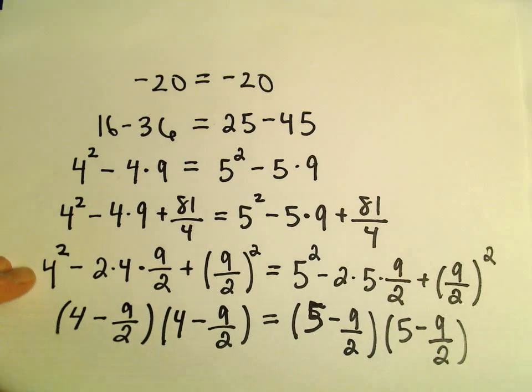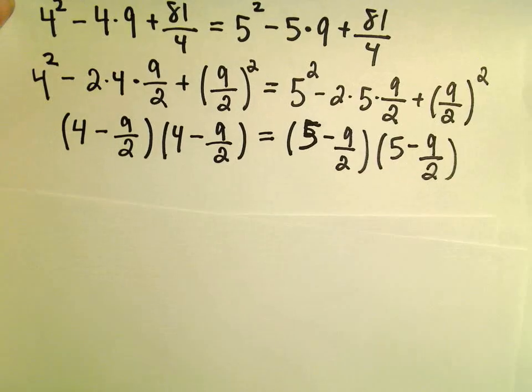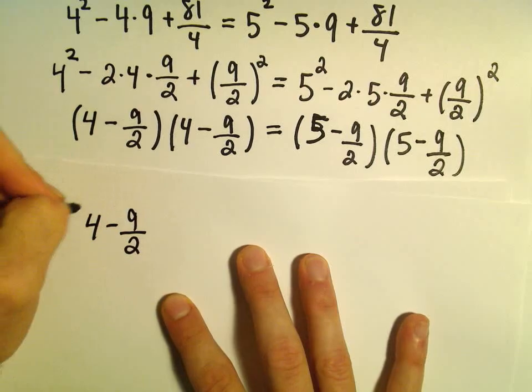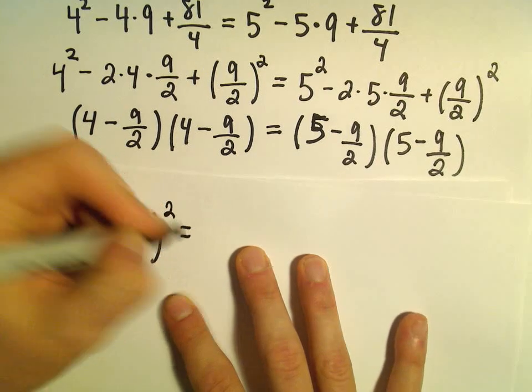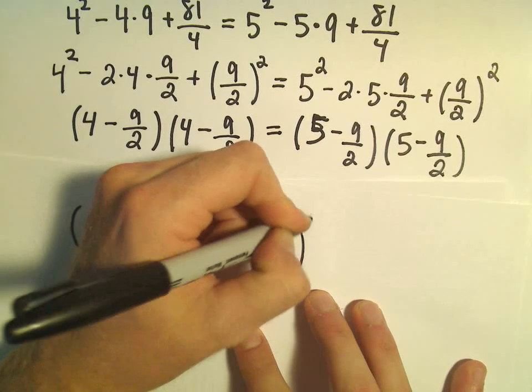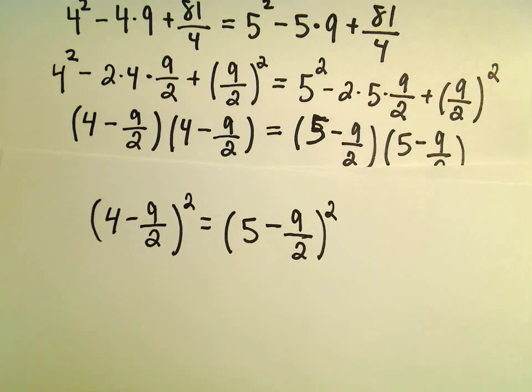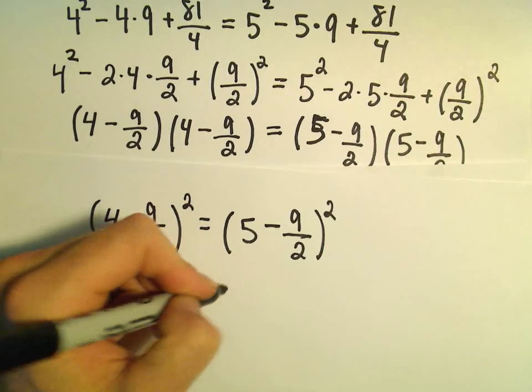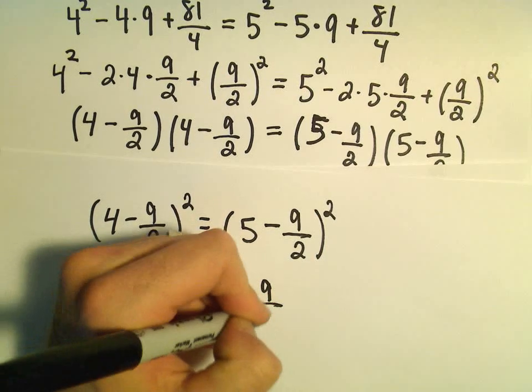What that tells us is we've got 4 minus 9 over 2 squared equals 5 minus 9 over 2 squared. That means 4 minus 9 over 2 equals 5 minus 9 over 2.